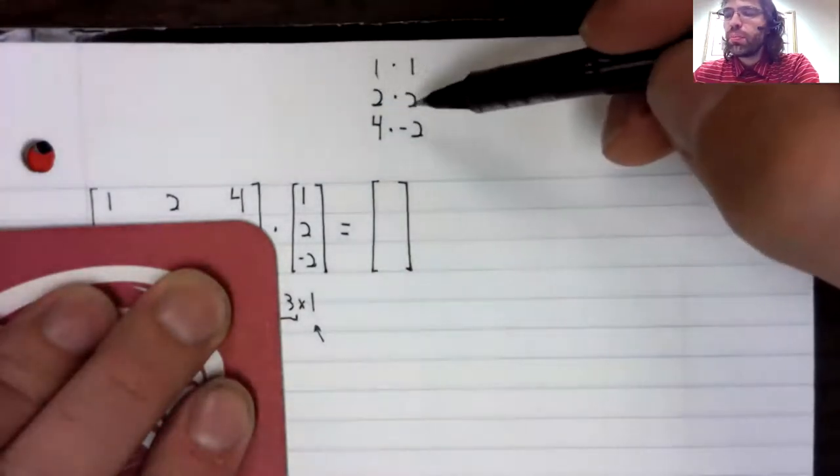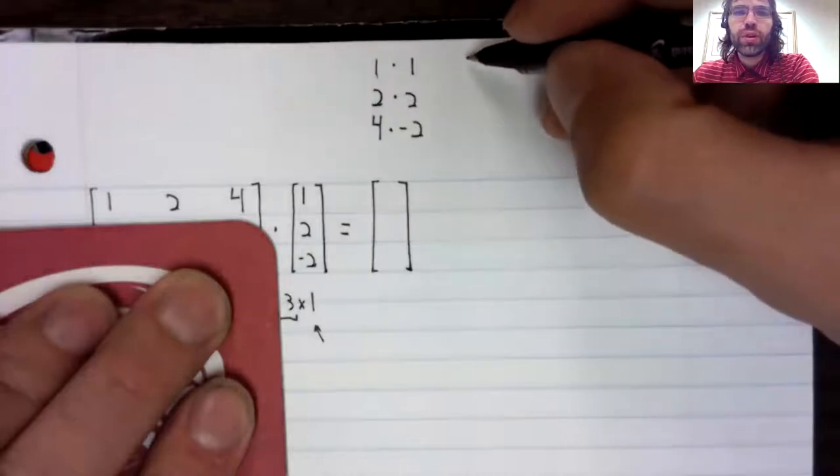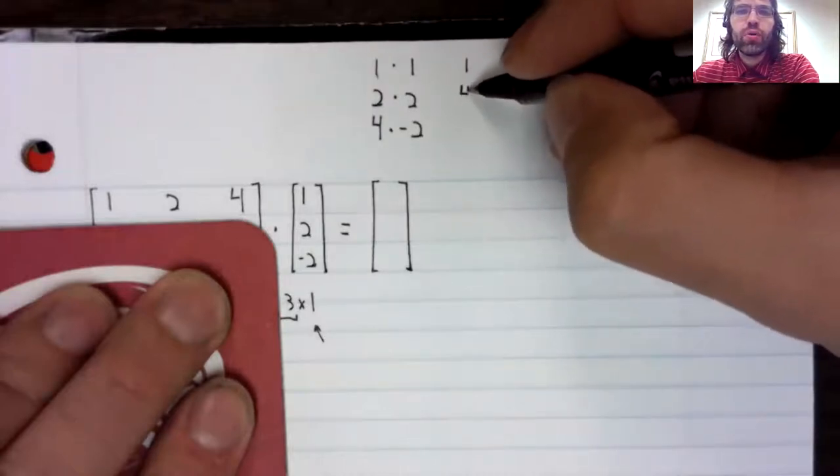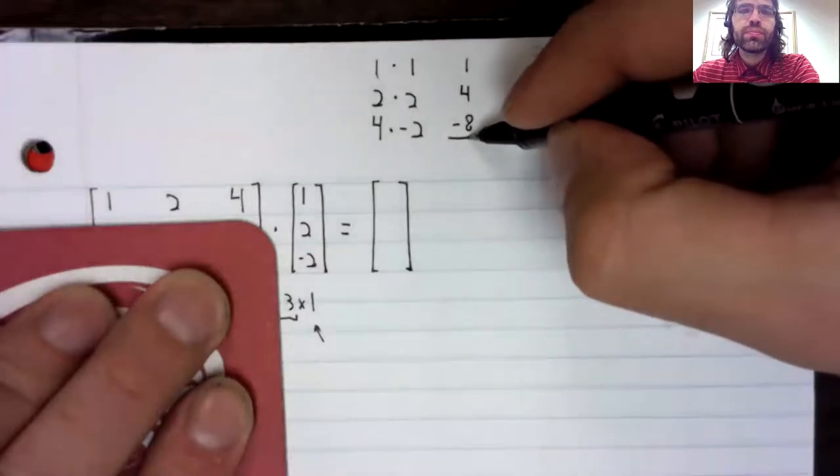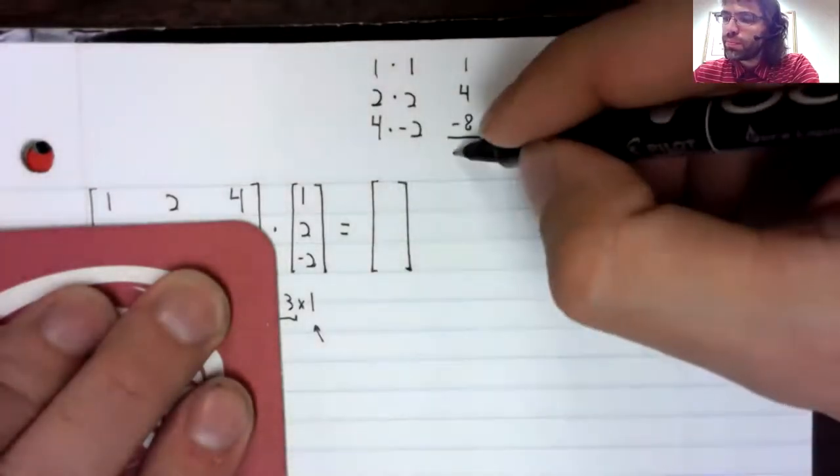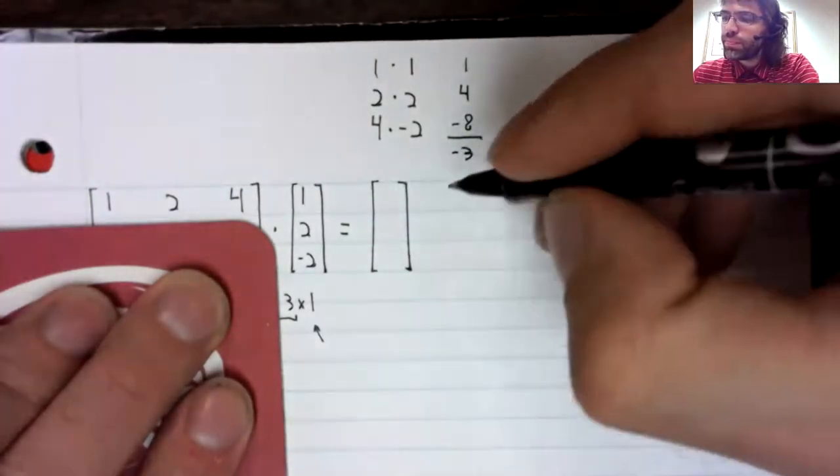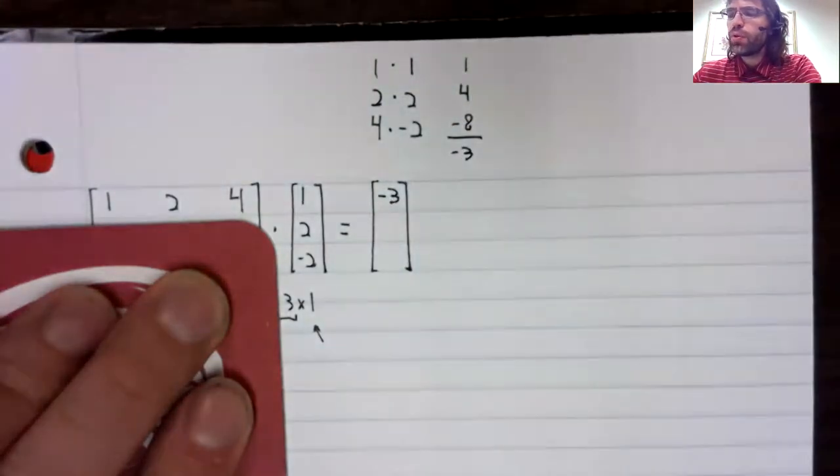We're going to multiply these numbers sitting next to each other: one, four, negative eight. Then we're going to add them, and that will be our entry there.